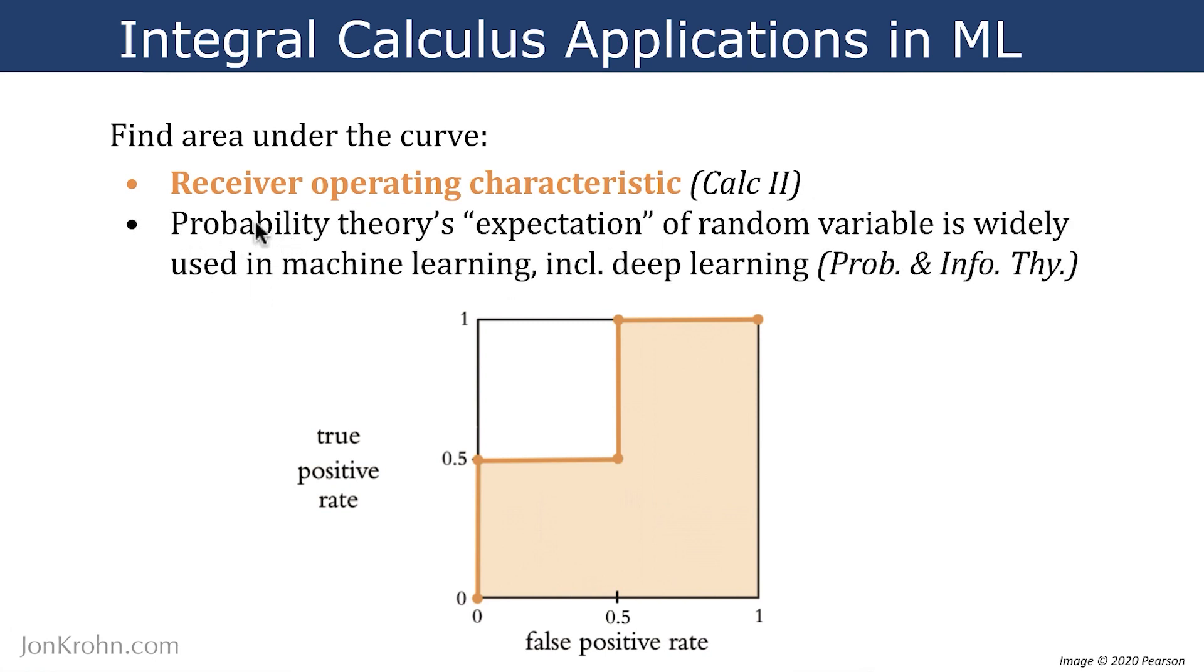Another example is finding the expectation of a random variable in probability theory. This is widely used in machine learning, including in deep learning models. We'll talk about that more in the forthcoming subject, the very next one in this Machine Learning Foundation series on probability theory and information theory.